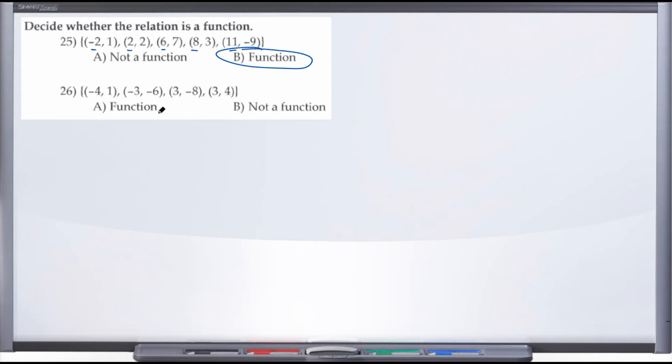Number 26, let's see what happens. We have a negative 4, negative 3, 3, and 3. So here, these last two points, our x-value repeats itself, and that indicates that this is not a function.